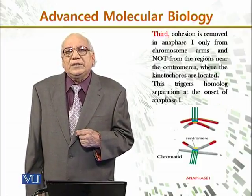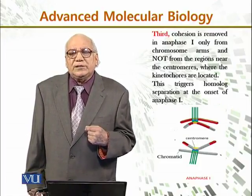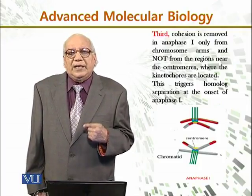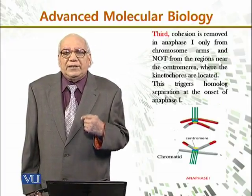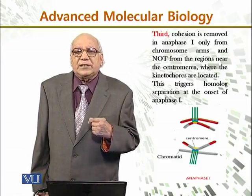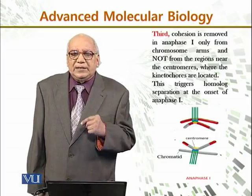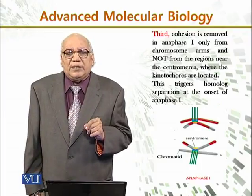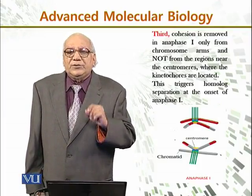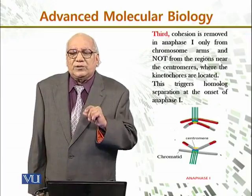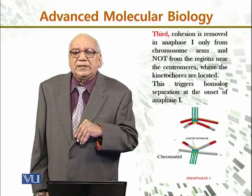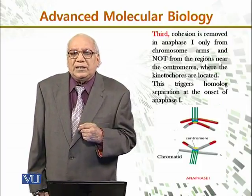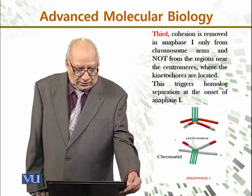The third feature: cohesion is removed in anaphase I only from the chromosome arms and not from the regions near the centromere. It is very important to remember that cohesion is removed only from the chromosome arms and not from the region near the centromere. That's why the chromosomes are separated but remain joined at the centromere. This triggers homolog separation at the onset of anaphase I.